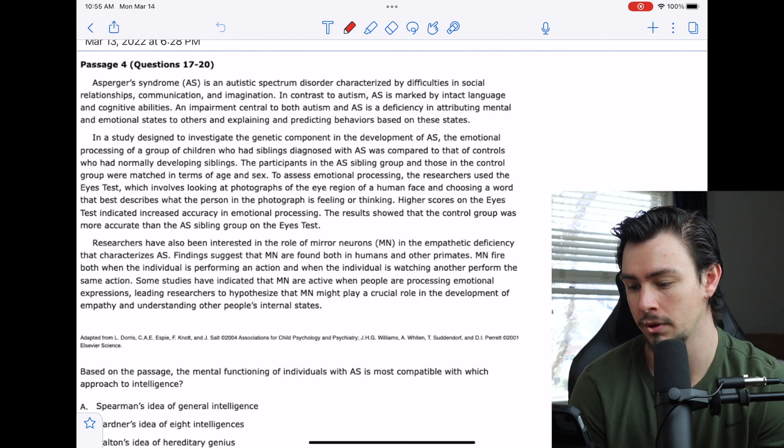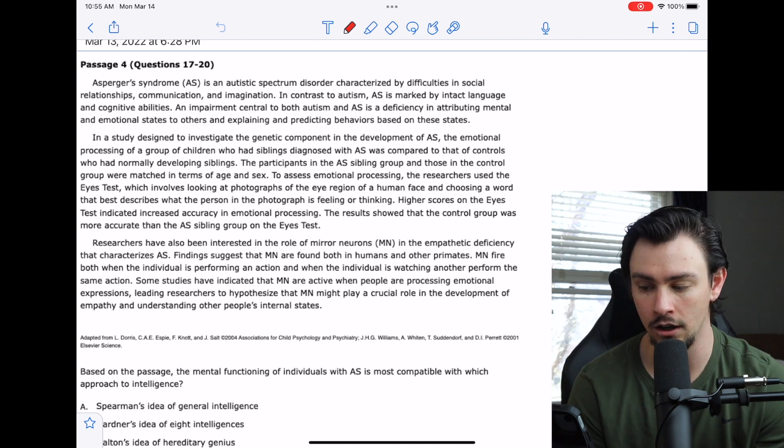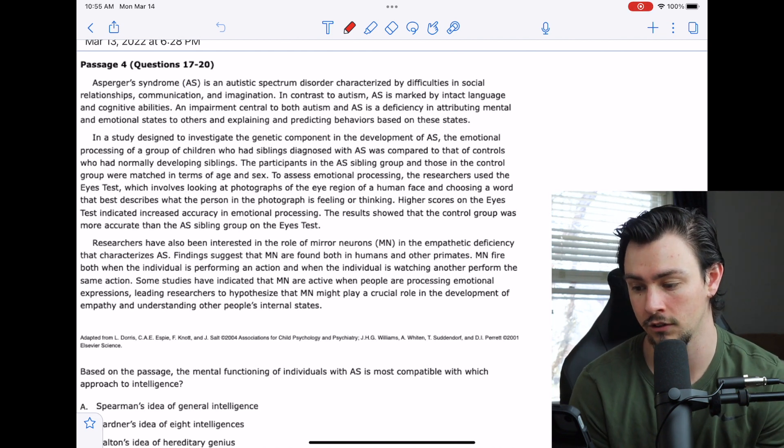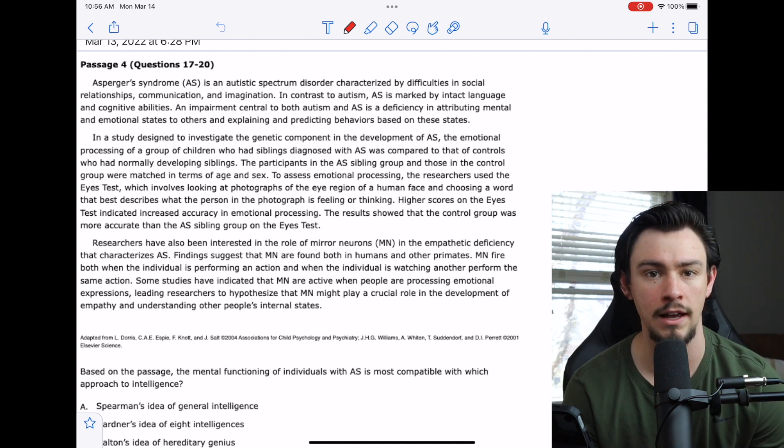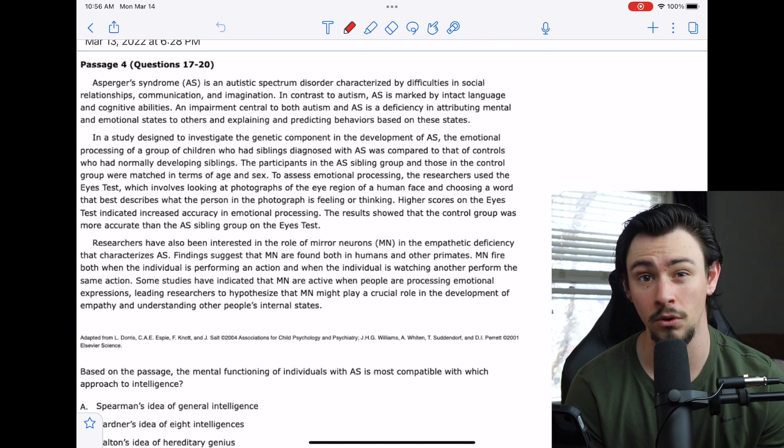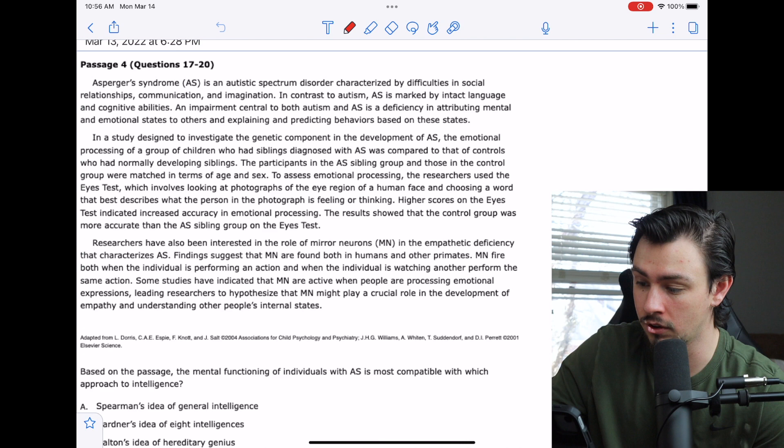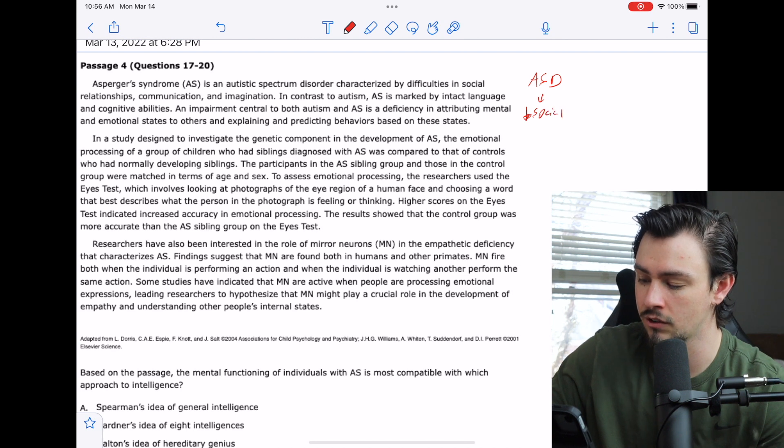Passage number four says Asperger's syndrome is an autistic spectrum disorder characterized by difficulties in social relationships, communication, and imagination. In contrast to autism, Asperger's syndrome is marked by intact language and cognitive abilities. An impairment central to both autism and Asperger's is a deficiency in attributing mental and emotional states to others. What I want to take from that is that we are talking about autism spectrum disorder and Asperger's specifically in that it leads to a deficit in social abilities.